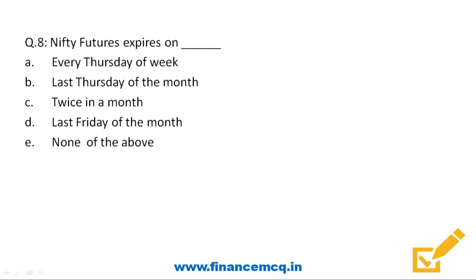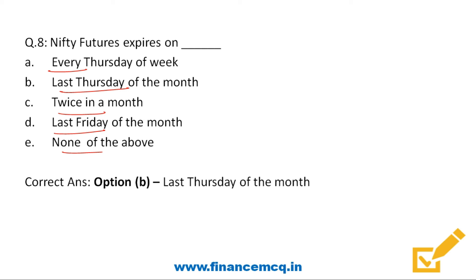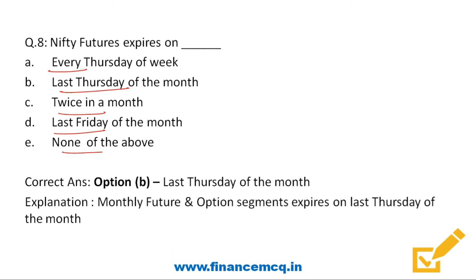Next question: Nifty futures expires on — every Thursday of the week, last Thursday of the month, twice in a month, or last Friday of the month? Two types of derivative contracts are traded on exchanges: futures and options. Nifty future is a type of future and it expires on the last Thursday of the month. All monthly future and option segments expire on the last Thursday of the month.